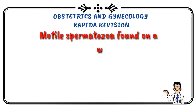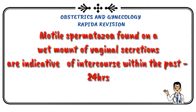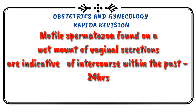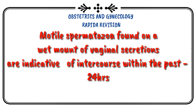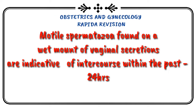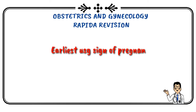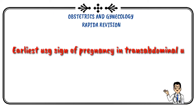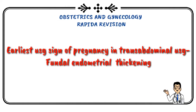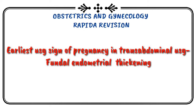Motile spermatozoa found in wet mount vaginal secretion indicates intercourse within the past 24 hours. Earliest ultrasound sign in pregnancy on transabdominal ultrasound is fundal endometrial thickening.